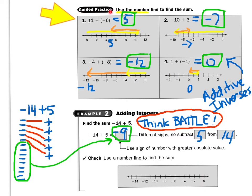Guided practice — use the number line to find the sum. Look at number one. If I have positive eleven plus negative six, I start at zero, and positive eleven means move to the right eleven, and then negative six means move backwards six places. So I end on five. The answer is positive five.